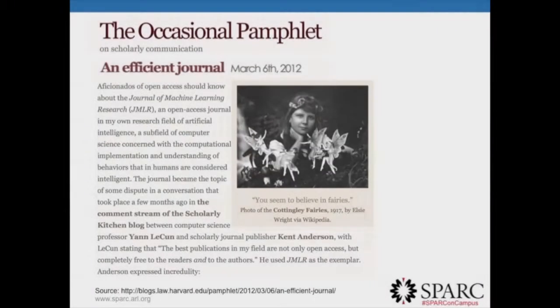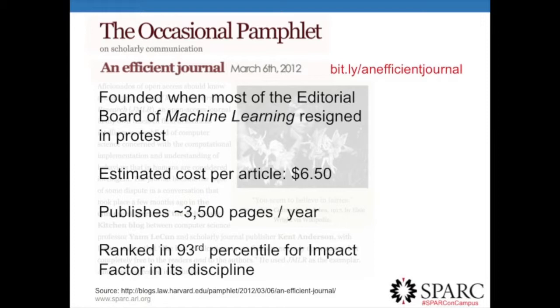In fact, it's only a minority of journals that charge anything to authors or readers. Most journals, like the Journal of Machine Learning Research, don't charge anything to authors or readers because so many inputs are voluntary and necessary costs — like managing peer review, copy editing, and hosting content online — can be covered in other ways. This particular journal is housed within a department at MIT, has a student who works as their webmaster, and much of the copy editing is voluntarily contributed. This is my favorite example partly because it was founded when the board of a subscription-based journal called Machine Learning resigned in protest at that journal's high cost and established the Journal of Machine Learning Research as a freely available replacement in artificial intelligence.